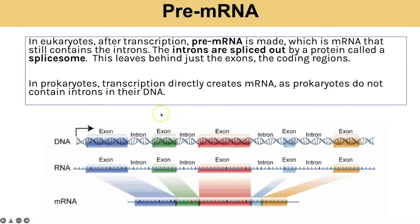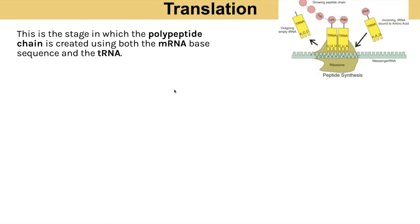The modification that occurs is splicing. In eukaryotes, after transcription we call the molecule pre-mRNA because it still contains introns — the non-coding sequences of bases that were present in the DNA gene that was copied. The introns need to be removed through splicing: they are cut out by a protein called a spliceosome, and now we have finished mRNA ready to leave the nucleus. This stage doesn't happen in prokaryotes because they don't have introns.